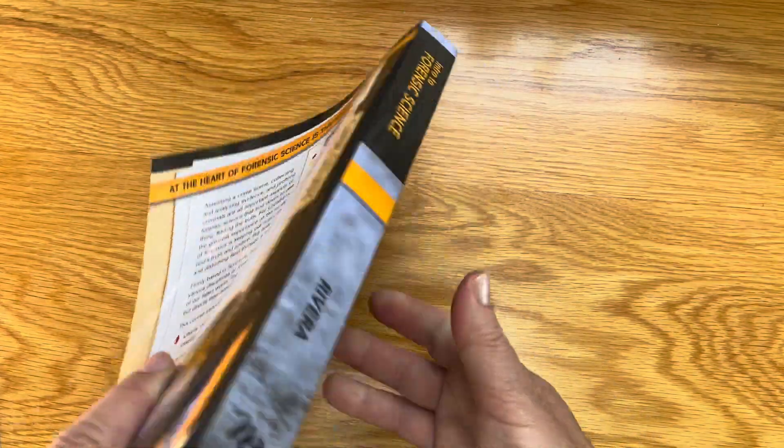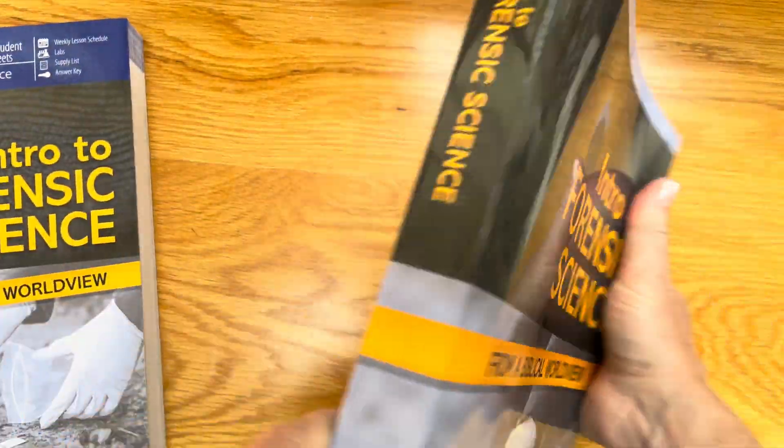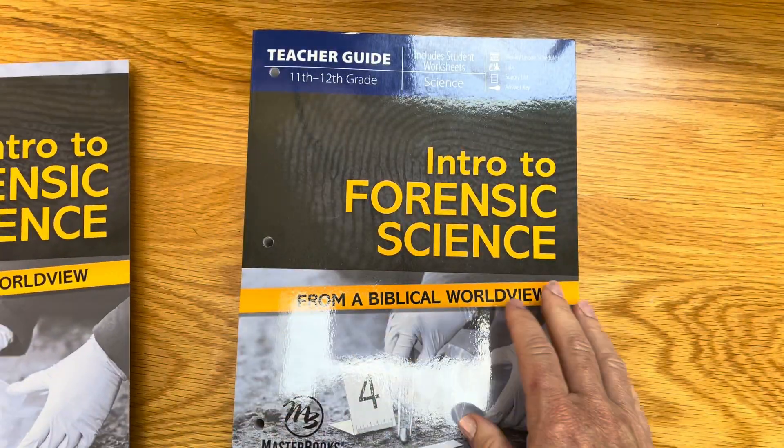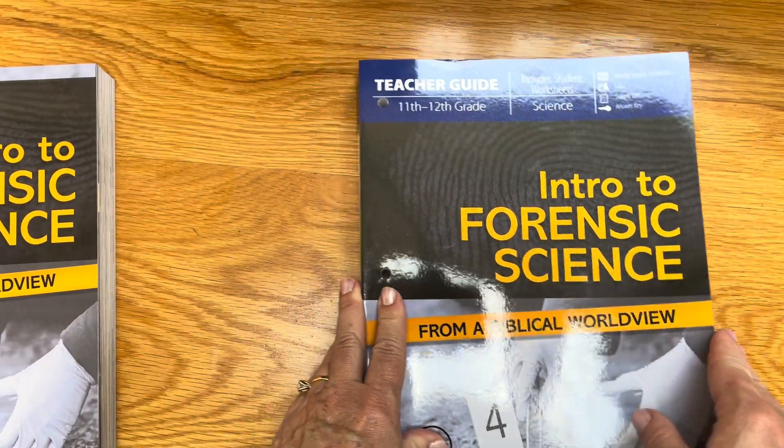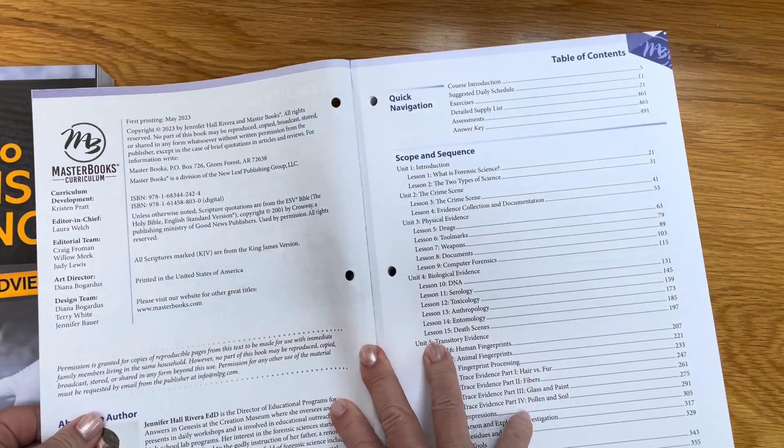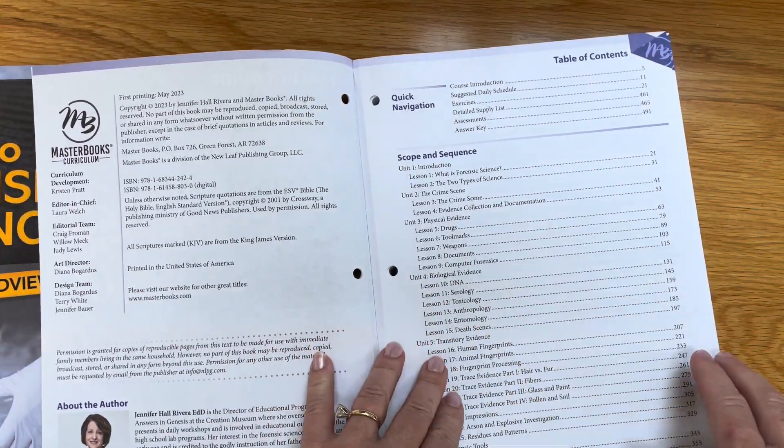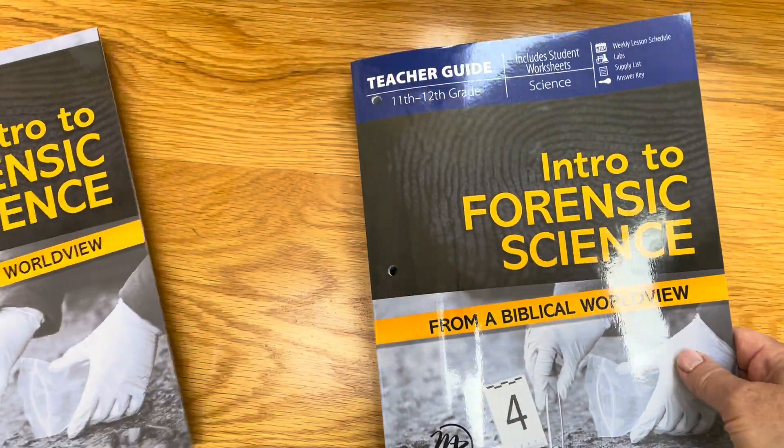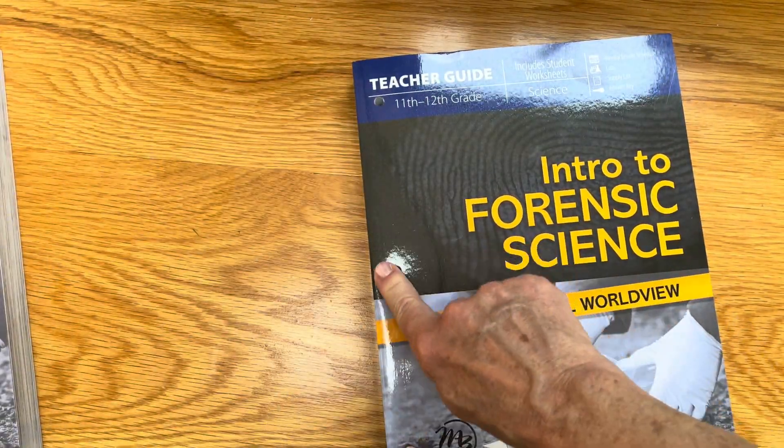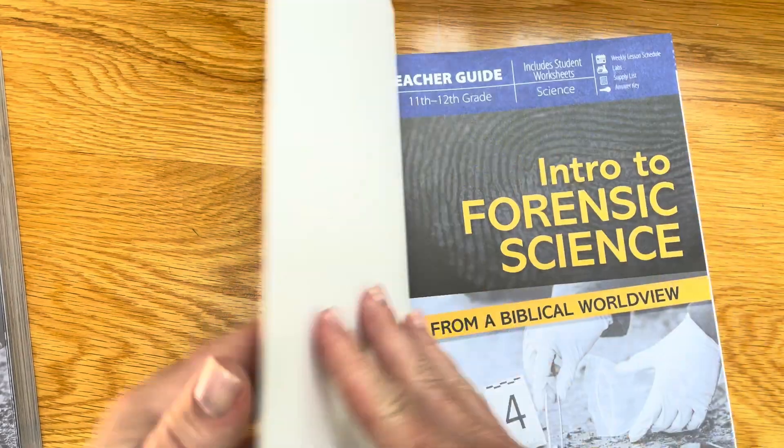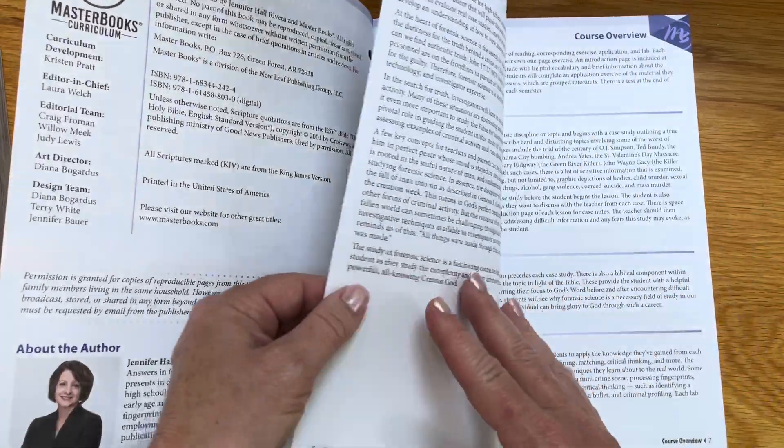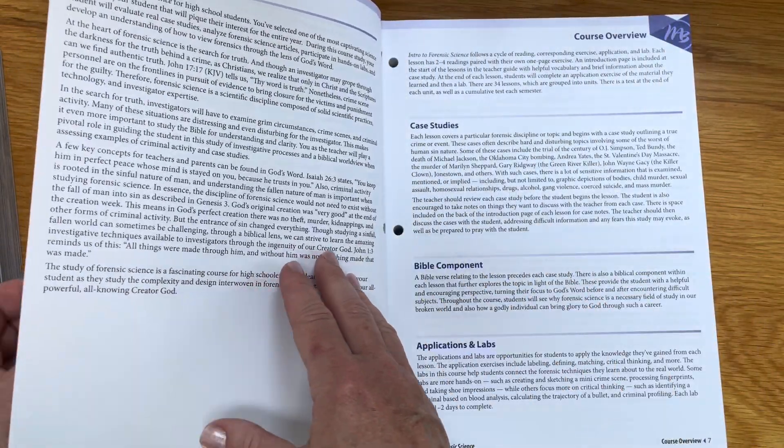Now I want to show you this other book. This is how thick this one is. This other book, the teacher's guide, has quite a lot of information in it. It goes through the scope and sequence. Notice that the textbook is bound, but this one is bound with three hole punch and perforated pages, so if you wanted to take some of these out you could.